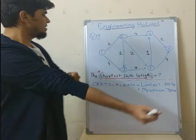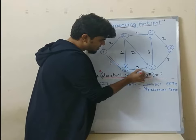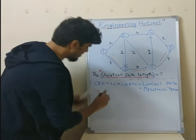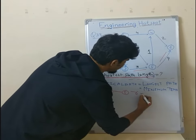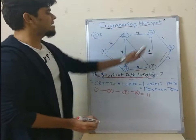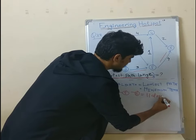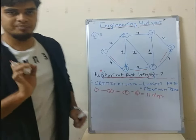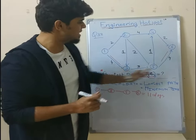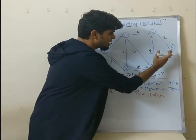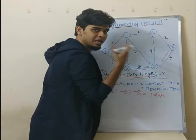The critical path, the longest path is 4 plus 3 plus 4, so either critical path 1-3-5-6 which is equal to 11. Now 11, if you think about 11 days, this project's longest path is 11 days. Critical path is 11 days. If we follow this path, then all our activities are in 11 days.